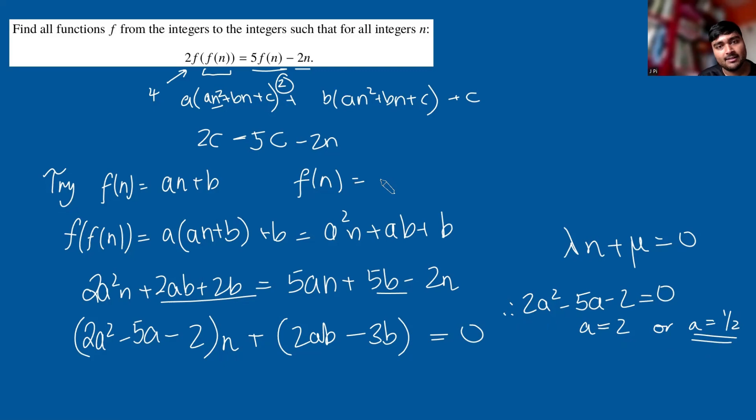It's hopefully not too difficult to see that a cannot be 1/2, because if a was 1/2, our function would be f(n) = (1/2)n + b, but then it wouldn't be from the integers to the integers. If you plug in n = 1, this would be b + 1/2, and so it couldn't be an integer. So a must be 2. We have f(n) = 2n + b. Let's work out what b is. We can factor out the b and get b(2a - 3) = 0. We now know a is 2, so we get 4 - 3, so b = 0.